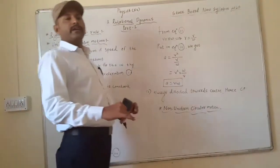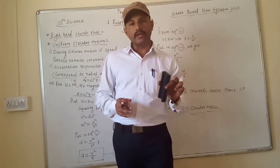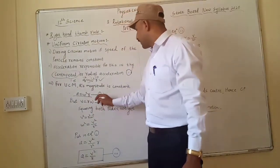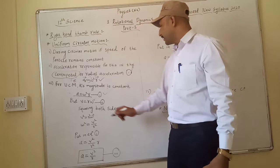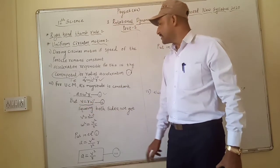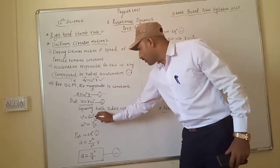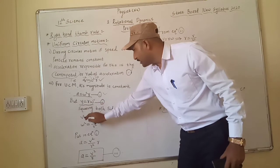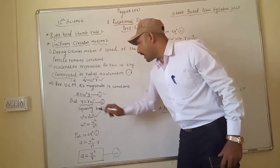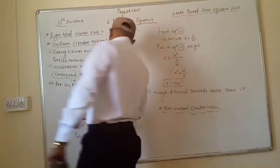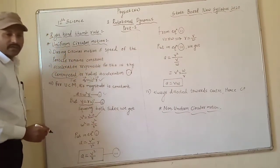You know the relation between linear velocity and angular velocity. Linear velocity is denoted by v (phi), and angular velocity by ω. The relation is given by the equation v = Rω. Squaring both sides, we get v² = R²ω².